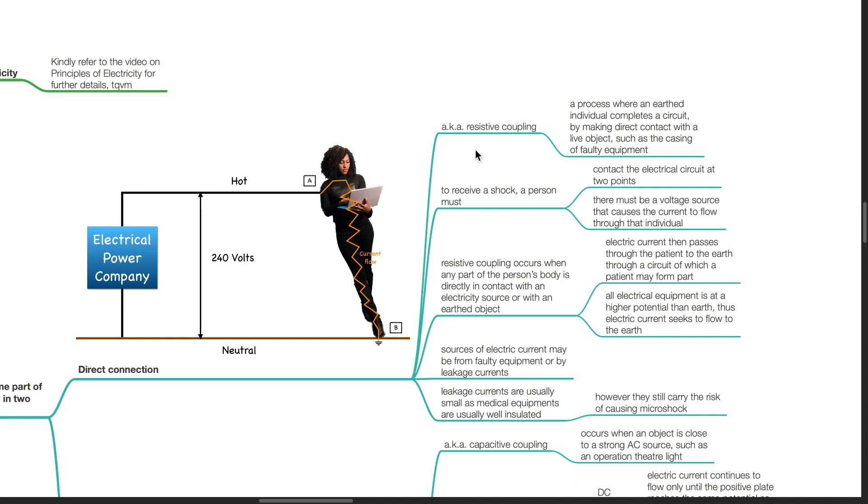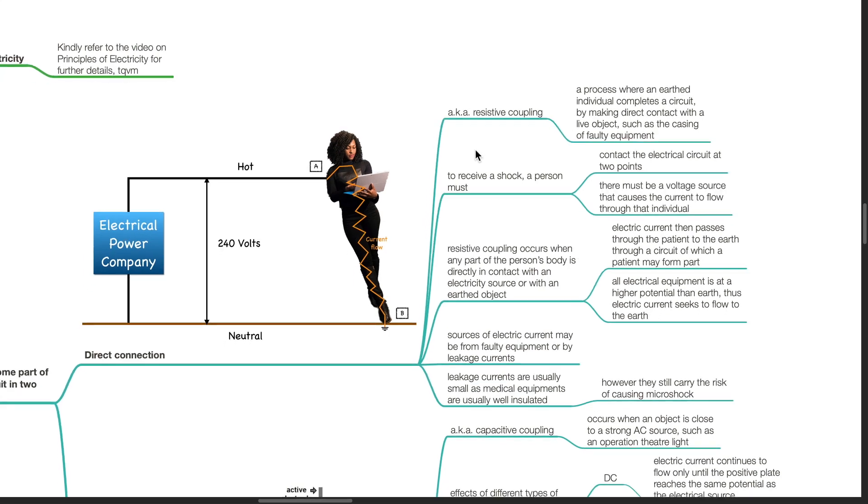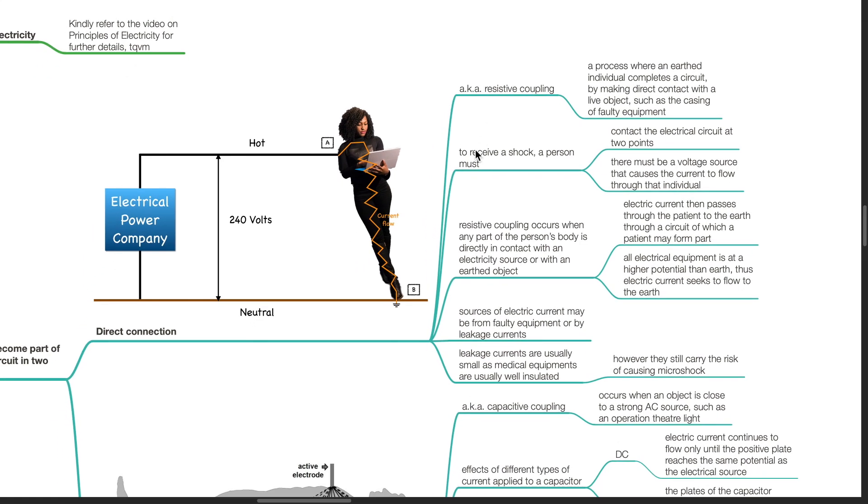To receive a shock, a person must contact the electrical circuit at two points, and there must be a voltage source that causes the current to flow through that individual. Resistive coupling occurs when any part of the person's body is in direct contact with an electricity source or with an earth object. Electric current then passes through the patient to the earth, through a circuit of which the patient may form a part.